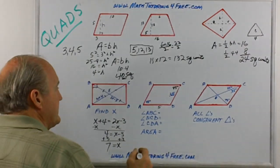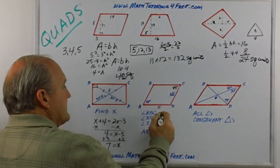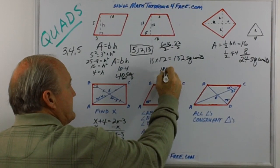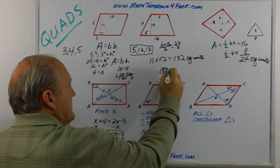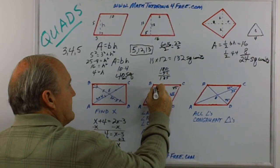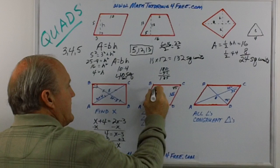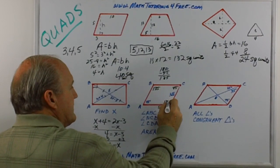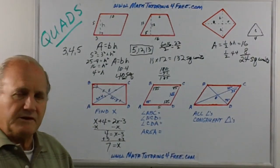They're supplemental. So if one angle is 45, we subtract that from 180, and the other angle then must be 135. And obviously the same thing down in this corner then. Opposite angles are equal.